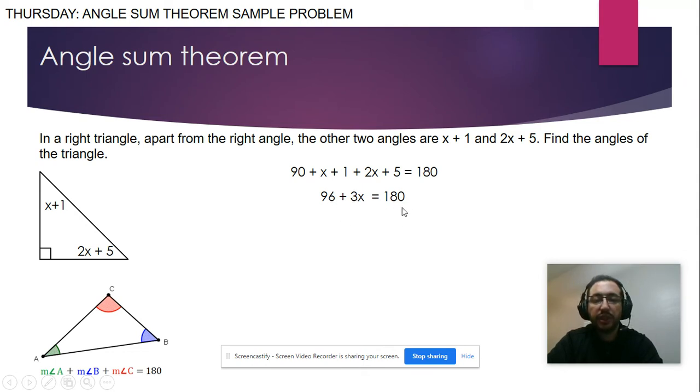Now we can solve for x. This is a constant on the wrong side, so it will be minus 96, minus 96. We end up with 3x equals 84. Divide both sides by 3 and we're going to have x equals 28.